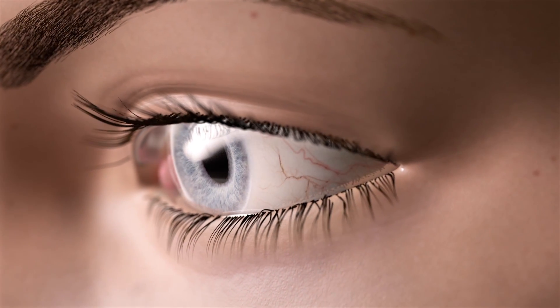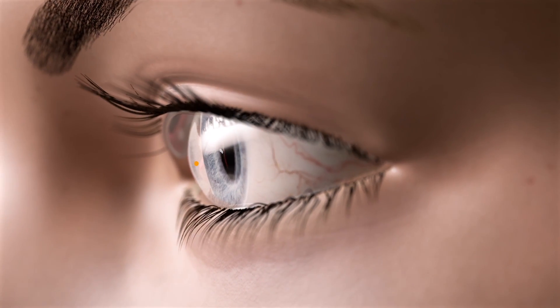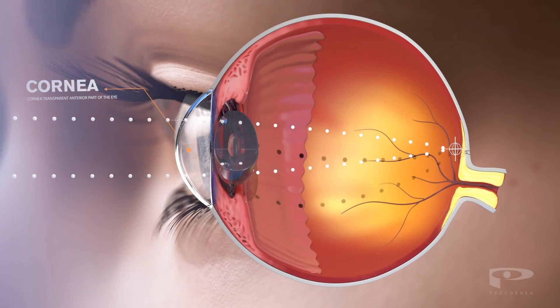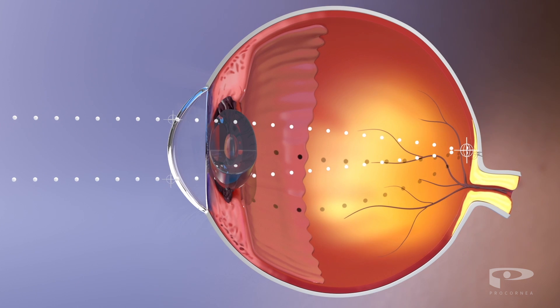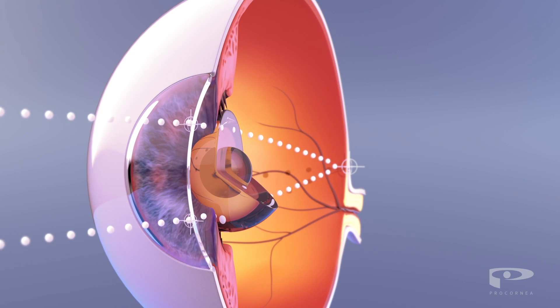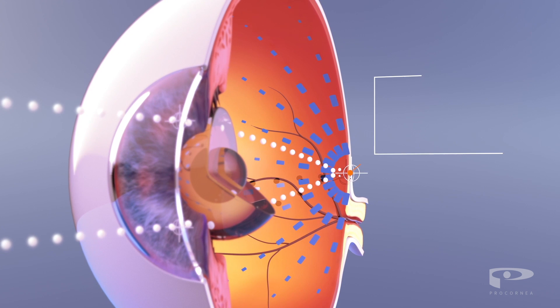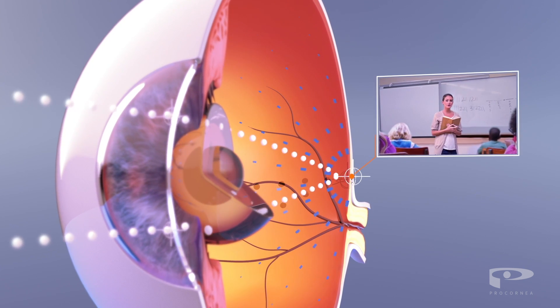When we look at something, light enters the eye through the cornea. The cornea has a curved lens-like shape, which helps to focus light directly on the retina at the back of the eye. This forms a clear, sharp image.